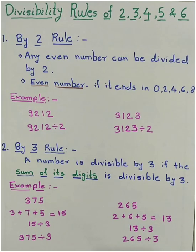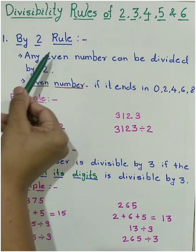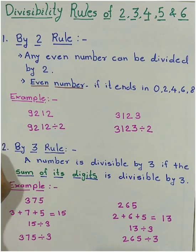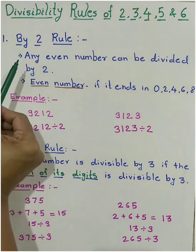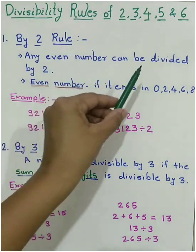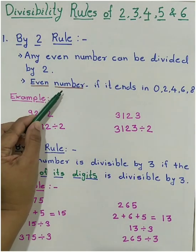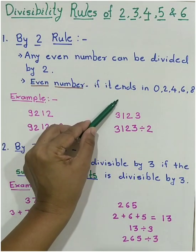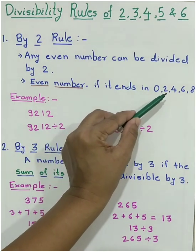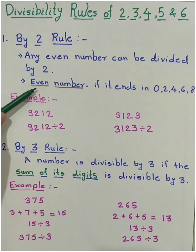The first one is by 2 rule. What this rule says? Any even number can be divided by 2. So now what is even number? Any number if it ends in 0, 2, 4, 6, 8, then it's an even number. Let's see some examples.